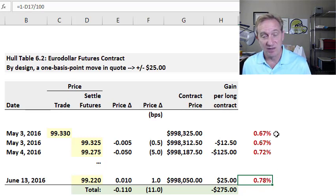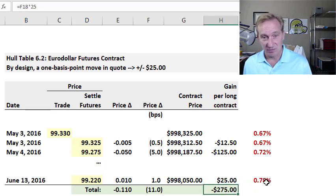We see the LIBOR here has moved from 67 basis points to 78 basis points—that's an increase of 11 basis points cumulatively over the one-plus-month period. You'll notice 11 basis points multiplied by $25 per basis point.